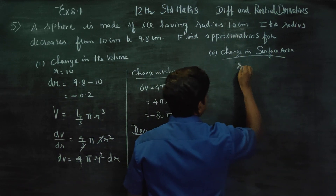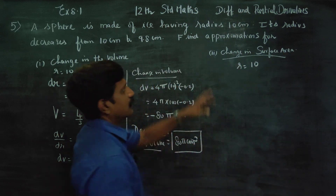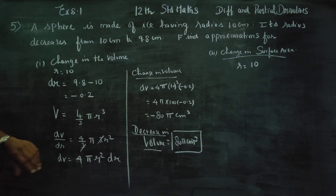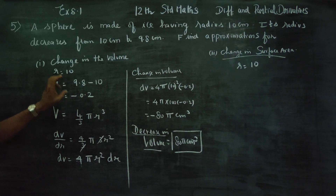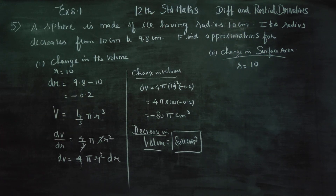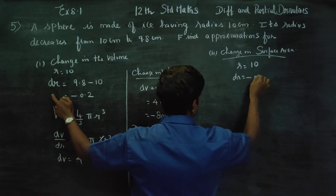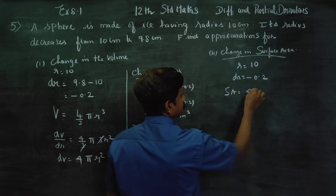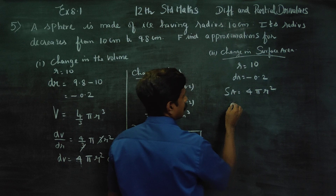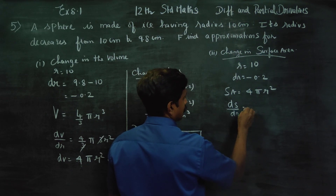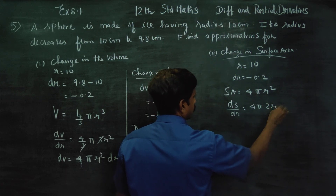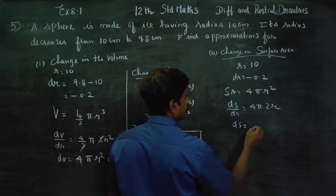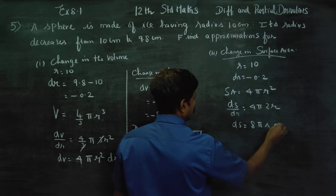Coming to change in surface area. The surface area of a sphere is 4π r². Differentiating, ds/dr equals 4π into 2r. Cross multiplying, ds equals 8π r dr. Here, original r is 10 and dr is minus 0.2.